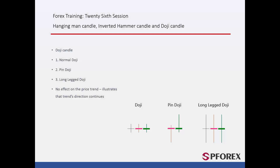Doji Candles are classified into three types: Normal, Pin, and Long Leg Doji. Normal Doji Candles have a cross or plus shape that may have no or a tiny main body. Pin Doji Candles have a tiny or no main body with a small shadow on one side, while the shadow on the other side is considerably long. Long Leg Doji Candles may have a minute or no main body, in addition to substantially long shadows on both sides.